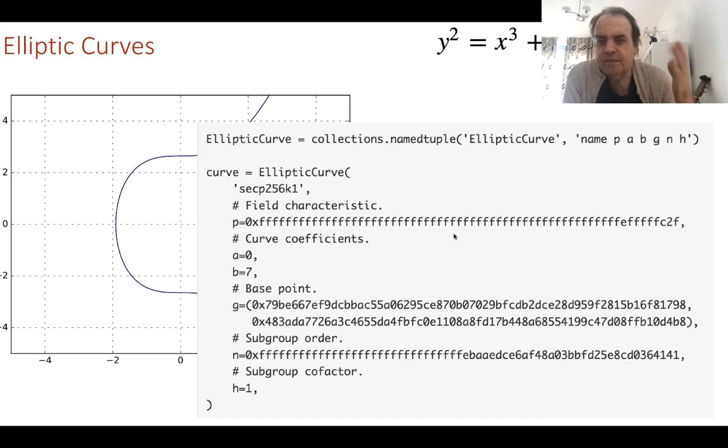Here's our prime number. I think that's something like 2 to the power of 256 minus something. a is zero, b is seven, and here is a generator point. This has been selected so that we have good security.